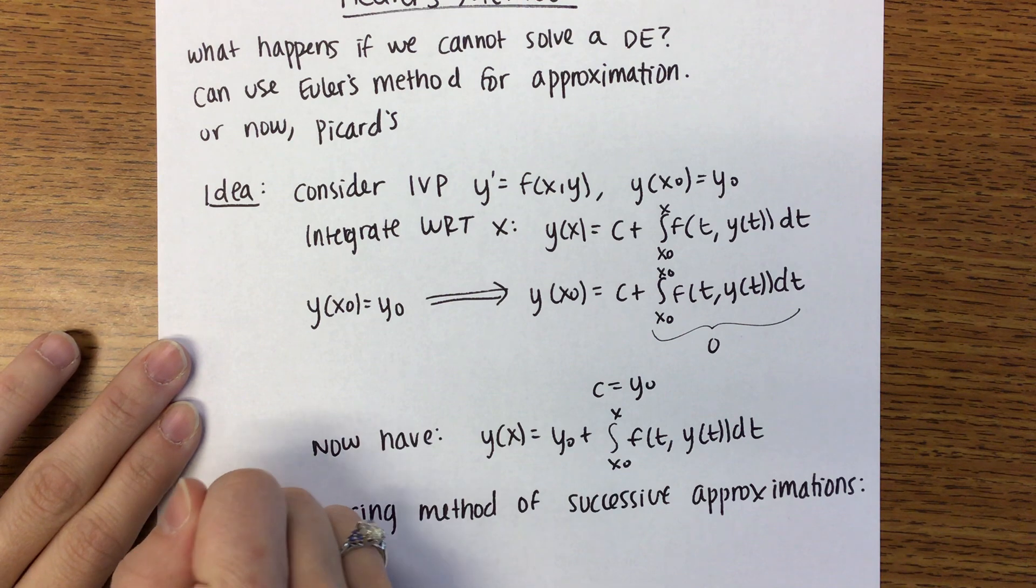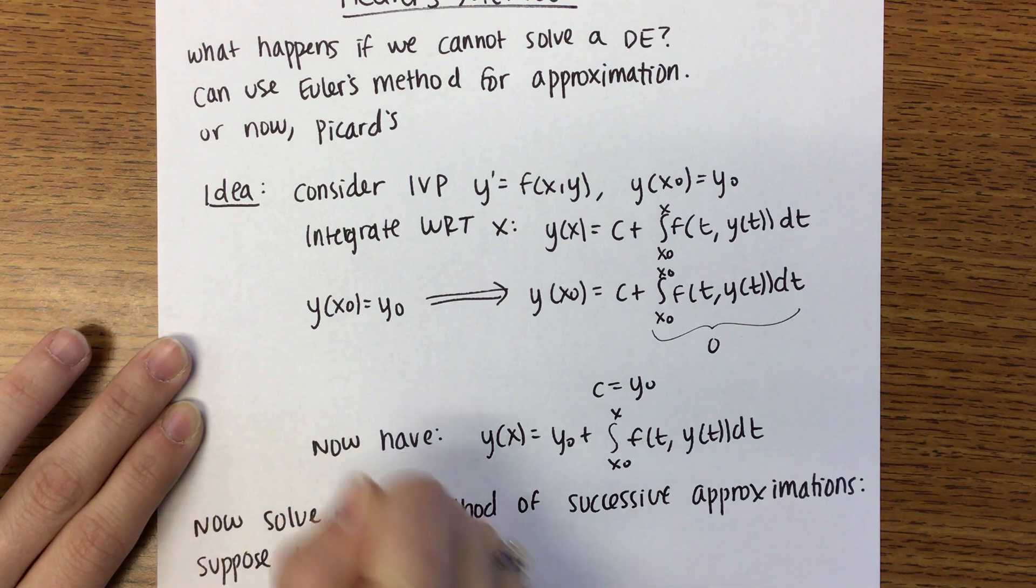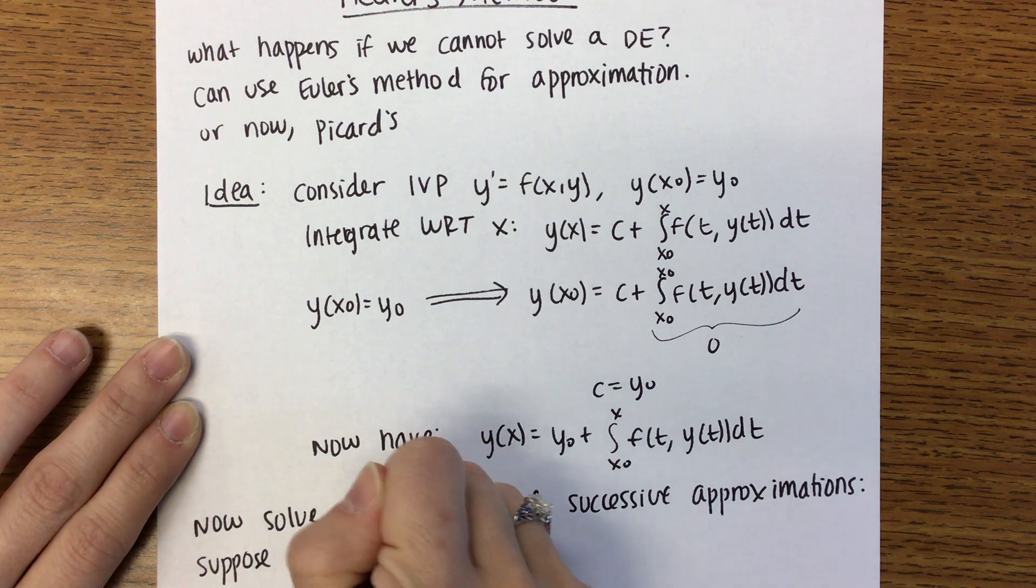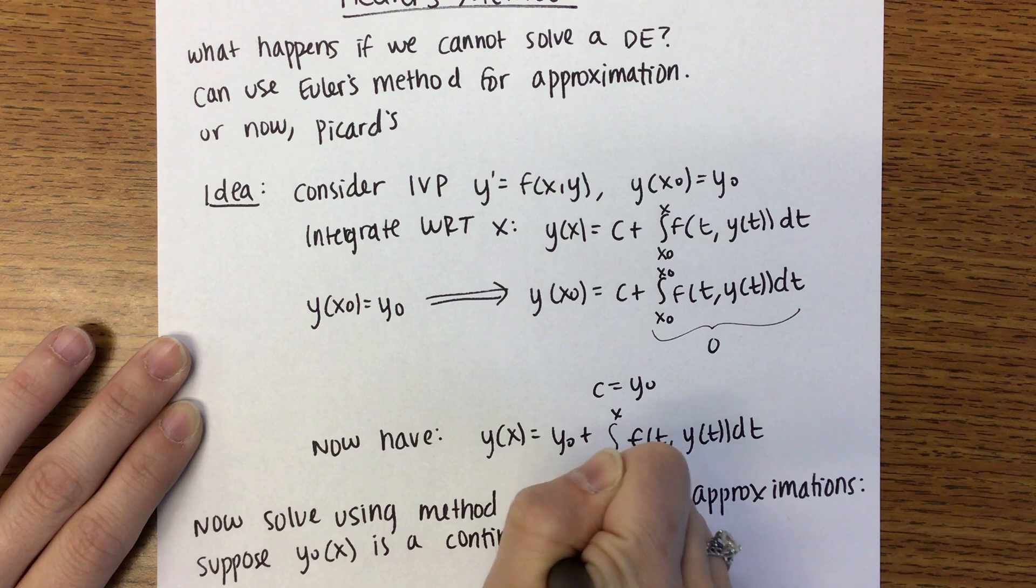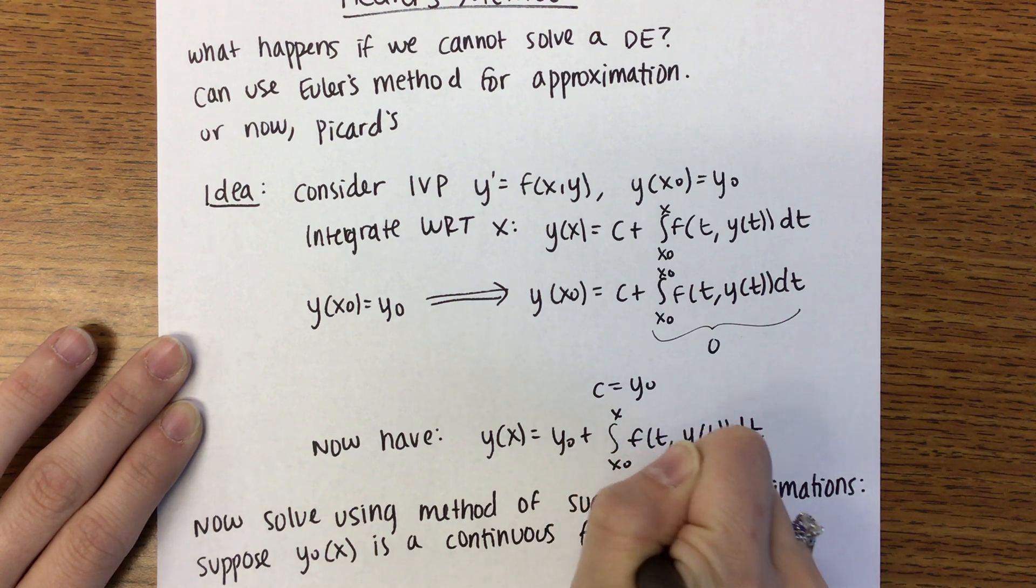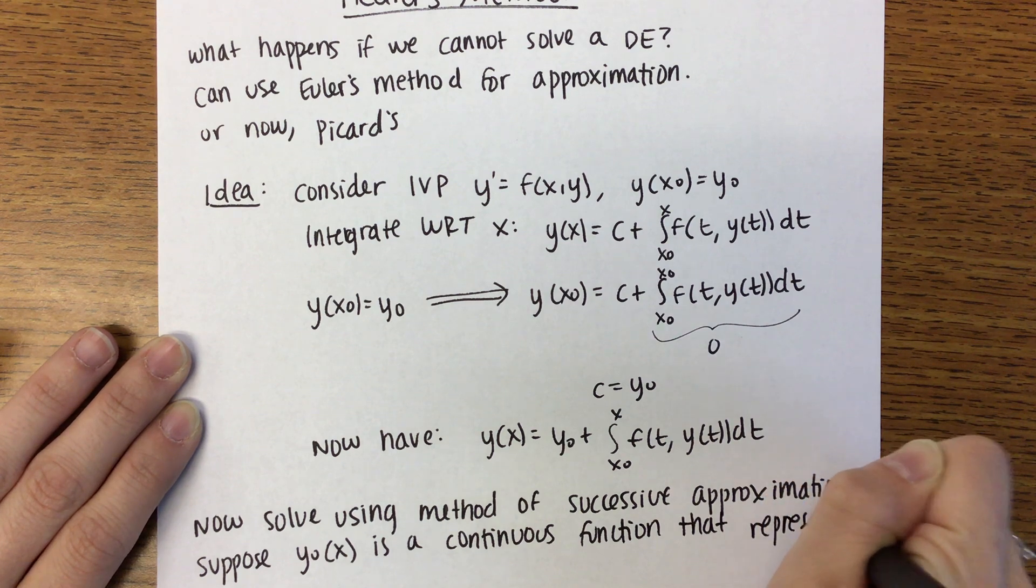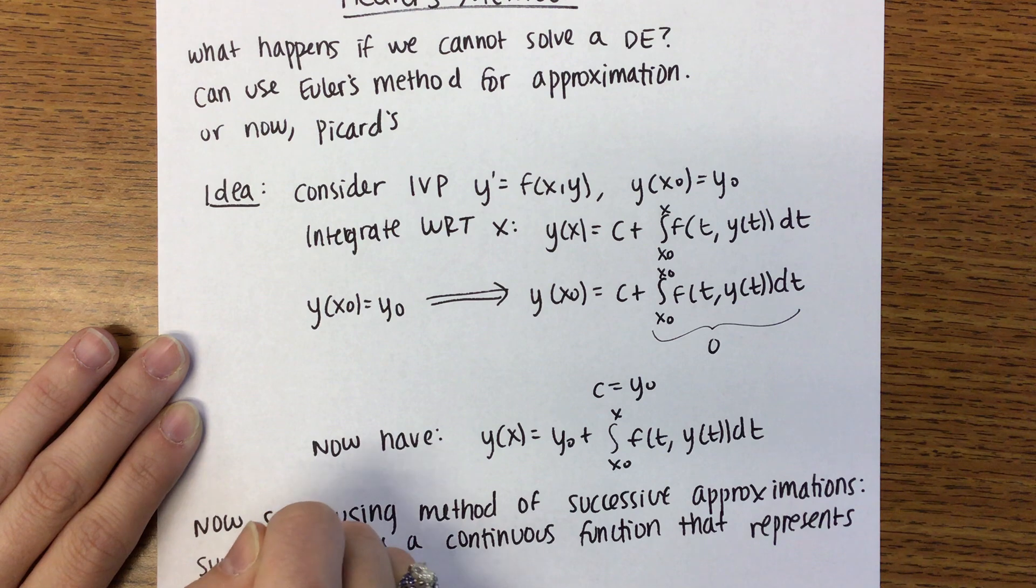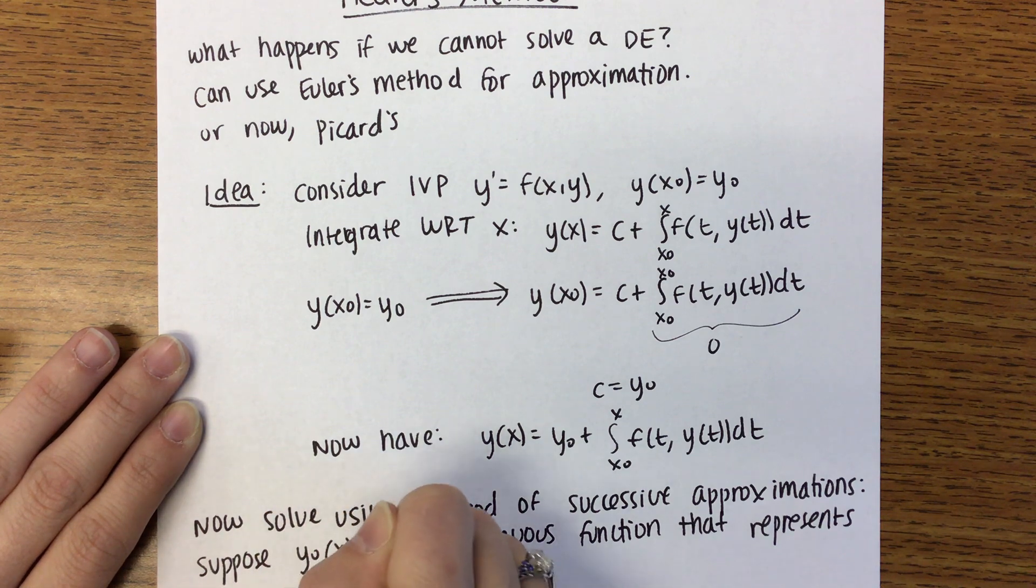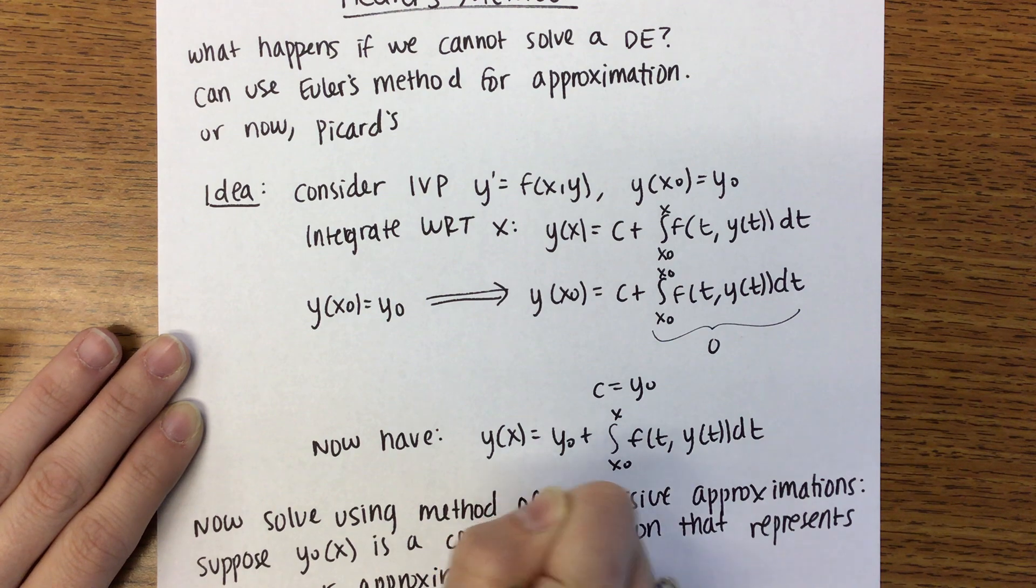Here's what we're going to do. We're going to suppose that Y0 of X is a continuous function that represents a guess or approximation to the solution.